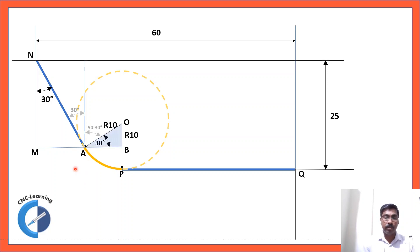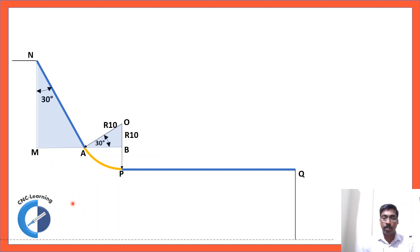So, finally, you have two right angle triangles. One is this with 30 degree and one side as 10 mm. And another right angle triangle and this angle is 30 degree. And these things you need to calculate.